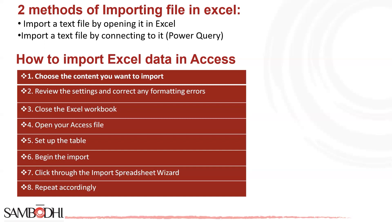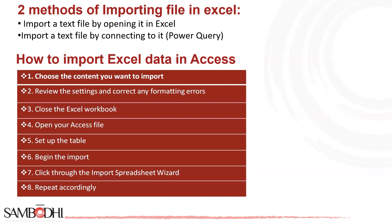Step four: open your Access file. Start Access and prepare the data destination. If you want to start a new file, navigate to the File tab, click New, and select Blank Database. If you'd rather move your data into an existing Access database, find and open the file. It's vital to adjust any read-only settings or edit permissions to allow you to add new content. Step five: set up the table. You can use an existing table in your database, but adjust the settings to ensure the data imports correctly. Check the names and data types of your first row to match the first row of the Excel data. Add any extra fields to ensure you have enough space in the table for the new data. If you have any duplicate information being imported, turn off the No Duplicates setting under Indexed.